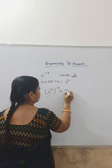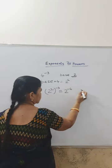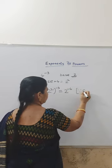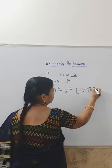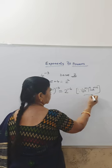Then we get 2 to the power minus 6 because a to the power m whole to the power n gives us a to the power m times n. Okay?